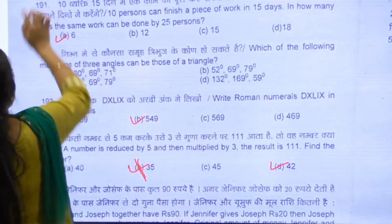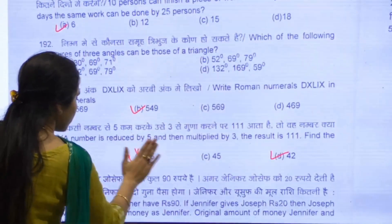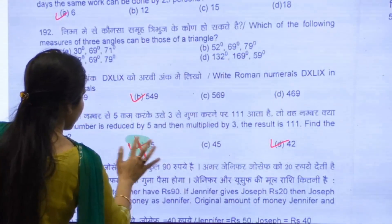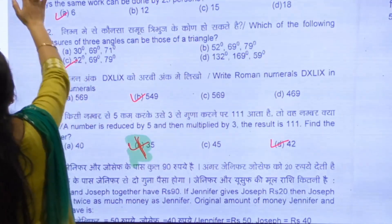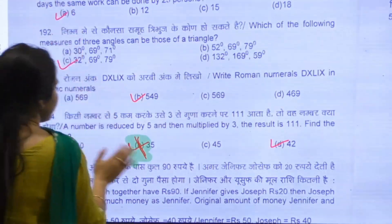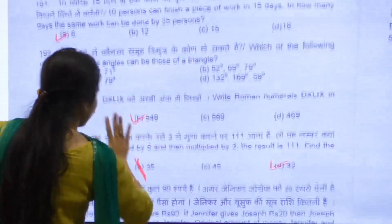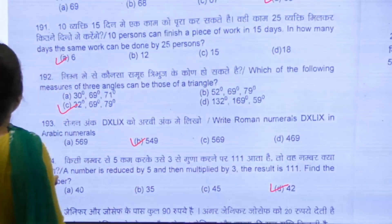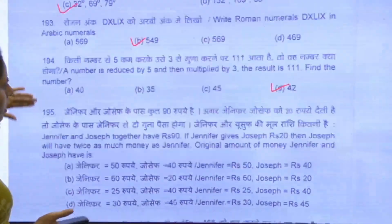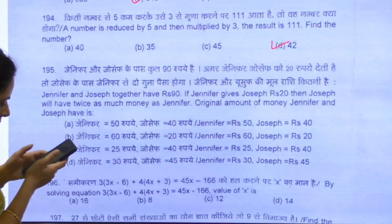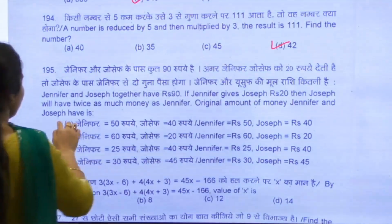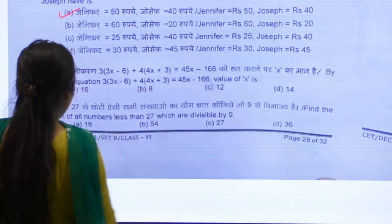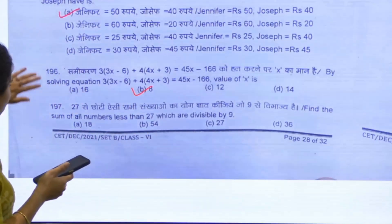Answer of 194 is D. 195 is A. 196, we have B. 197, we have C as our answer.